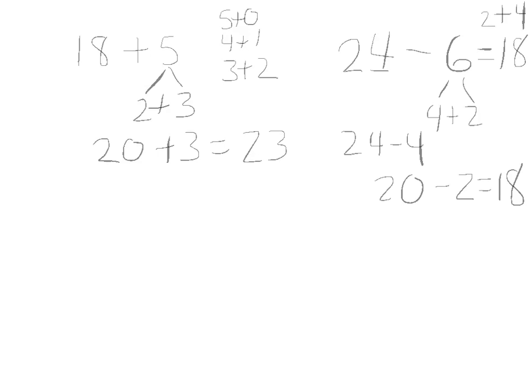We always want to try and look for these multiples of 10s, an easy way to break numbers apart. So even as the numbers get larger, if we have 97 and we want to add 9 to it. So we have 97. Well, 97 is only 3 away from 100.